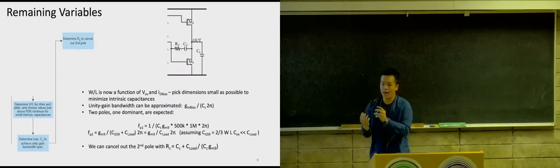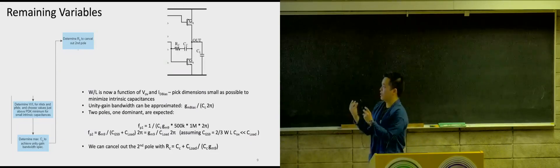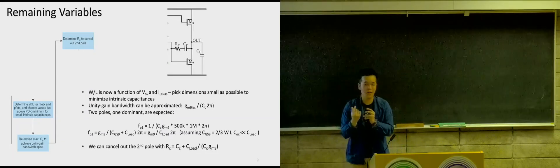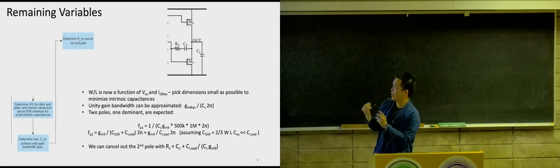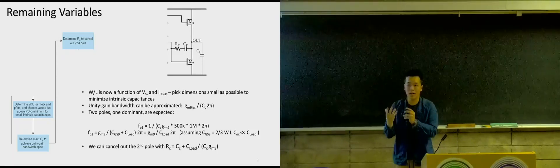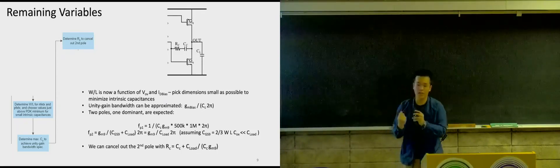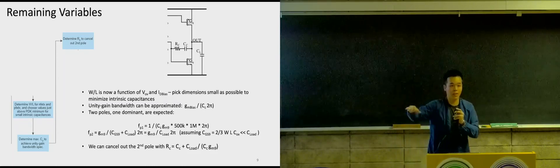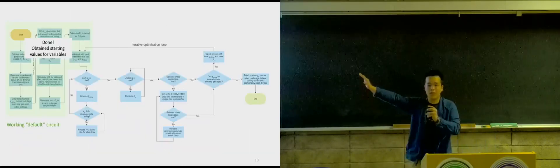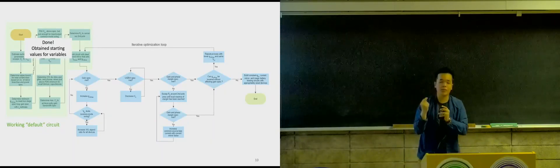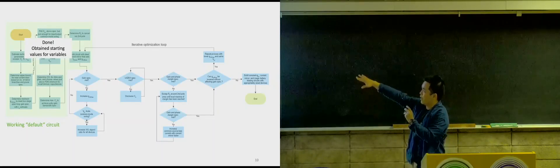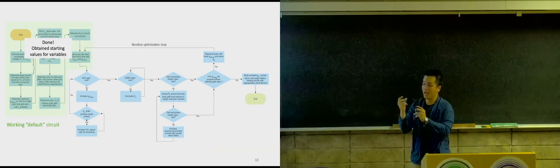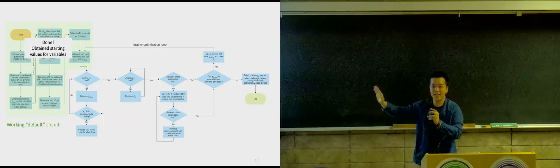Now, with all these fixed variables, we can derive the rest — W over L, which are functions of VOV and GM bias. We pick low values so that we don't have high intrinsic capacitances. Unity gain bandwidth is again a function of GM bias, and we can derive CC to meet the unity gain bandwidth spec. We can also predict the poles and cancel out that second pole with the nulling resistor. We're done with that first stage — we've done a lot of the legwork to have an initial guess point. It's nice that I have a working default circuit that if time is really tight, I can always default back to it and submit, and it will be fine.